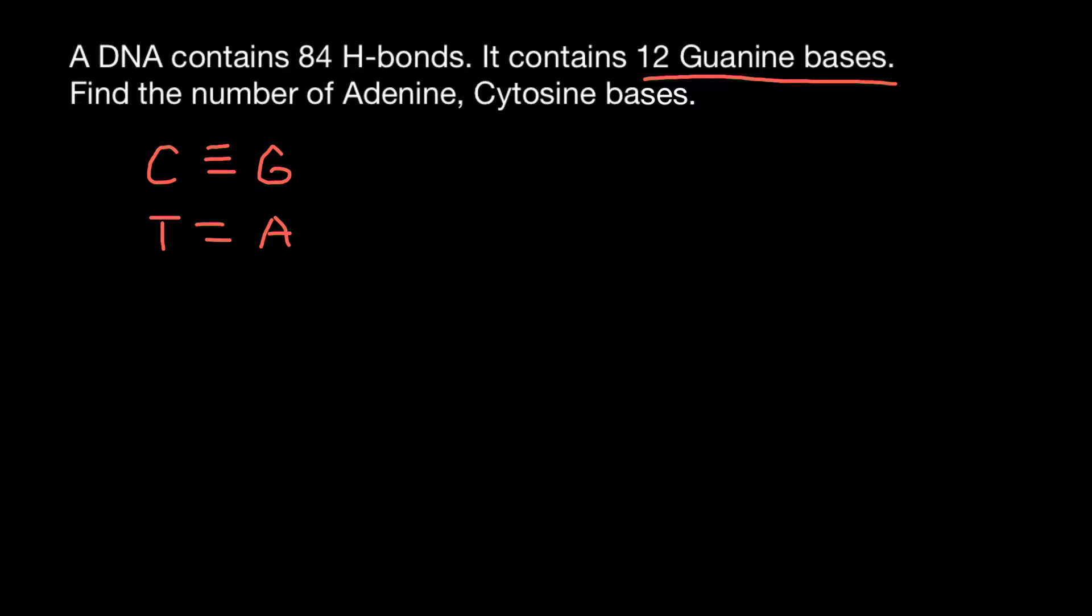And between each such base pair we have a triple bond. And so 12 guanine-cytosine base pairs would have 36 hydrogen bonds. So we can put this number here.